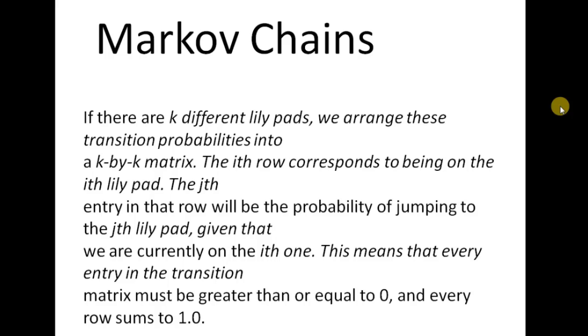But the frog has amnesia. It has no memory of what lily pad it was on at any previous step or how long it has been hopping around. So the probability distribution of its next hop is only a function of where it is now.